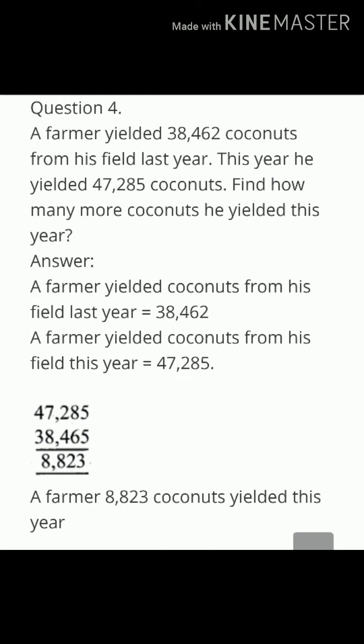Now, fourth one: A farmer yielded 38,462 coconuts from his field last year. This year, he yielded 47,285 coconuts. Find how many more coconuts he yielded this year. The solution is: